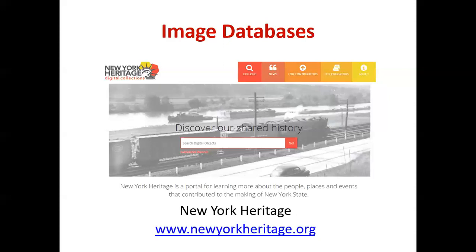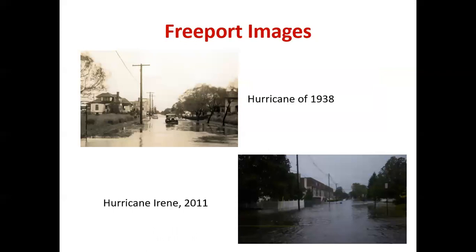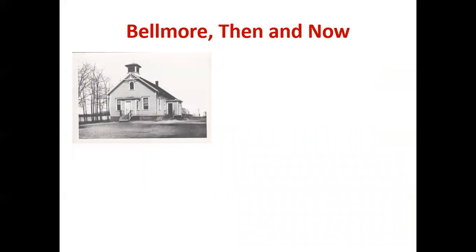One of the interesting things about image databases is you can search through time — you learn about what went on in your town, how certain things have changed, and some things just stay the same. Here's an image of the hurricane of 1938 of the casino, and that is the same angle as a picture from Hurricane Irene — in both cases the street flooded. So not much has changed there. Looking in the same database at Bellmore, the first image is the Bellmore schoolhouse, built right around 1888, which is now a private residence.